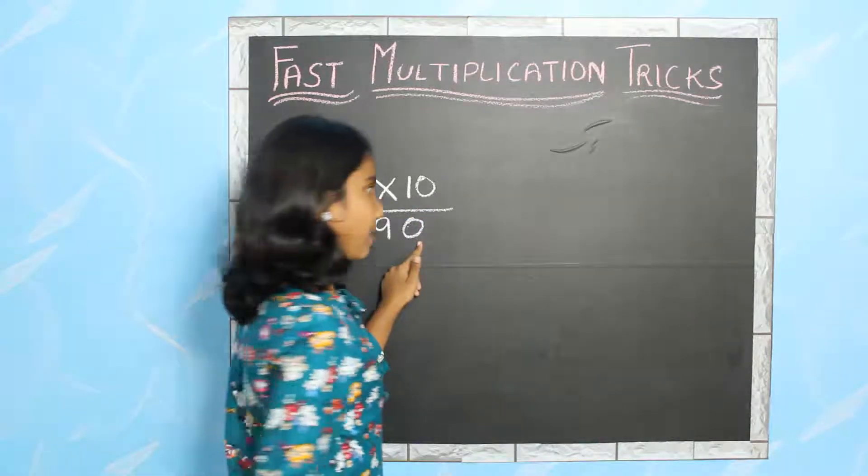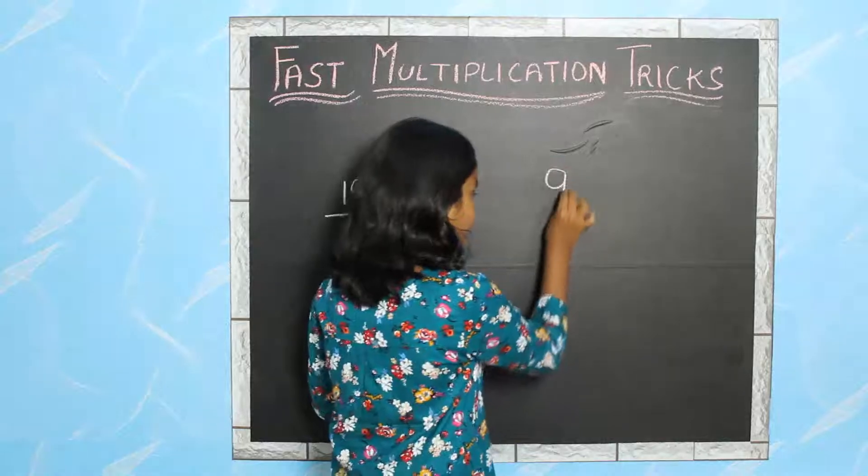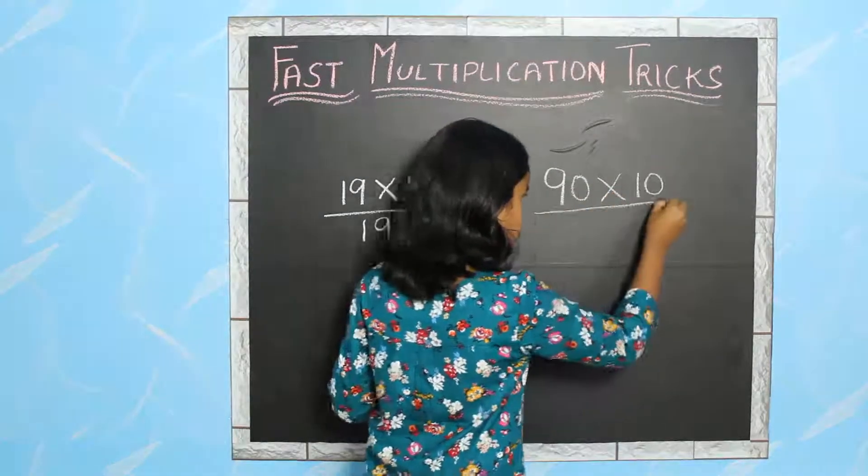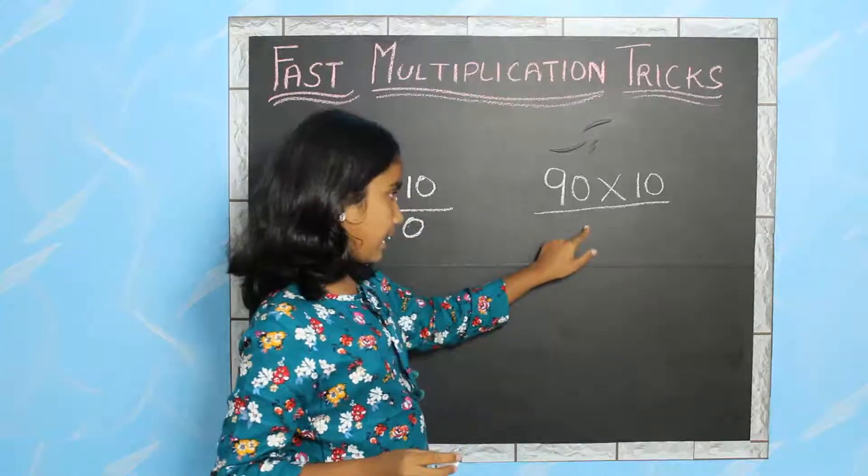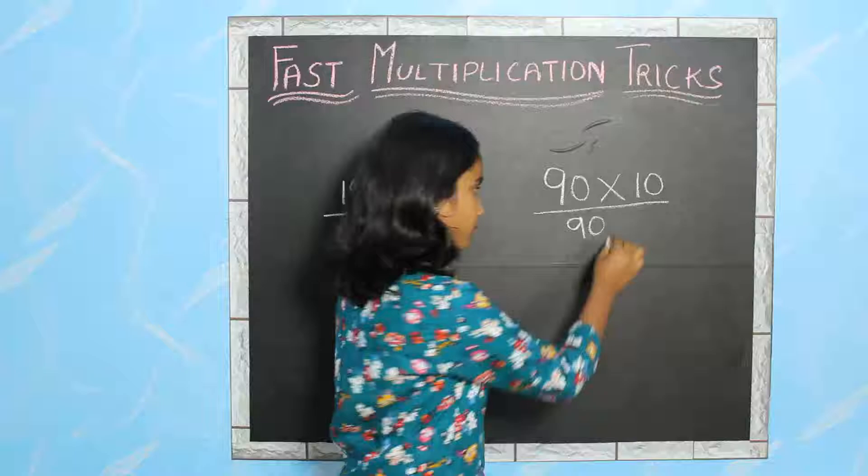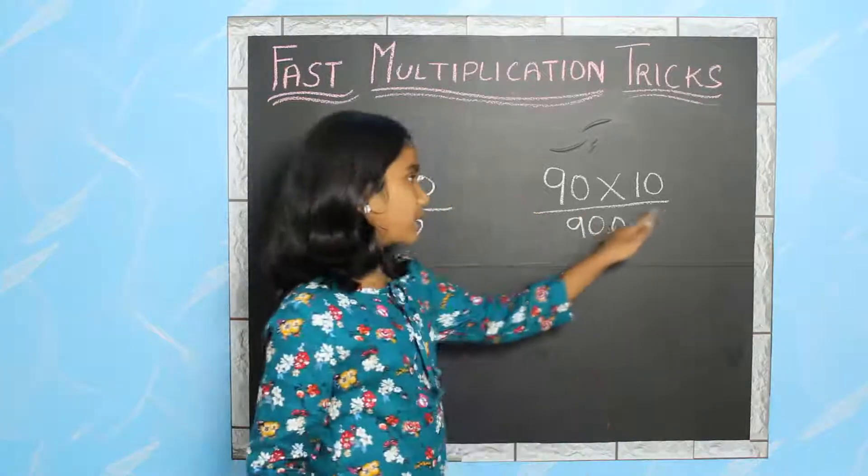So now let's take another example. 90 into 10. I am going to bring down 90 as it is and add a 0. So 90 into 10 is 900.